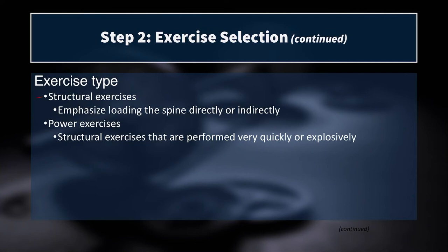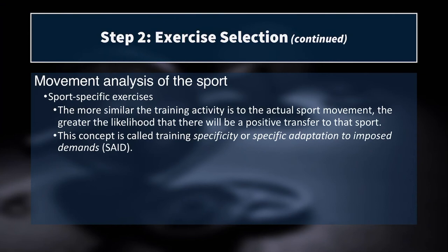We also have power exercises — structural exercises performed very quickly or explosively. We often think of weightlifting and its derivatives, but these can also include kettlebell swings, loaded squat jumps, or any loaded movement performed with maximal acceleration or that is ballistic. Now, we need to select sport-specific exercises, but it gets murky when figuring out which exercises have the highest transfer of training to the sport. The NSCA textbook specifies that the more similar the training activity is to the actual sport, the greater the likelihood of positive transfer — this is known as the SAID principle, or training specificity: a specific adaptation to imposed demands.